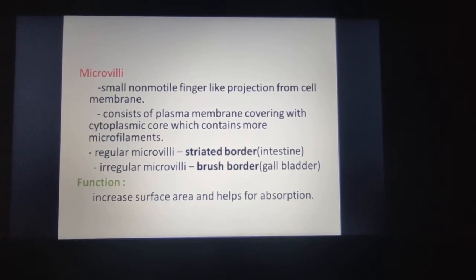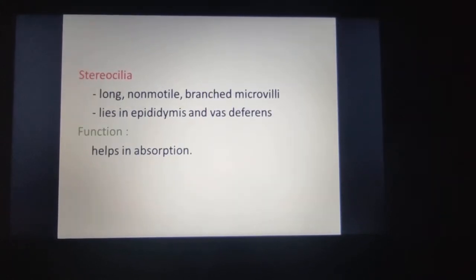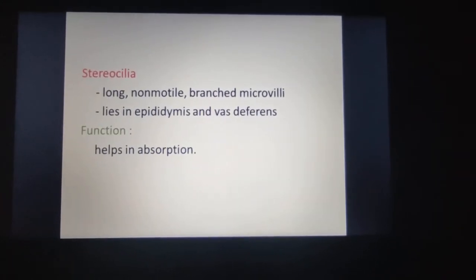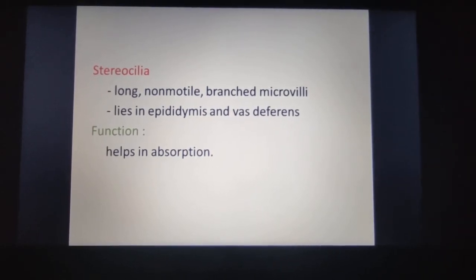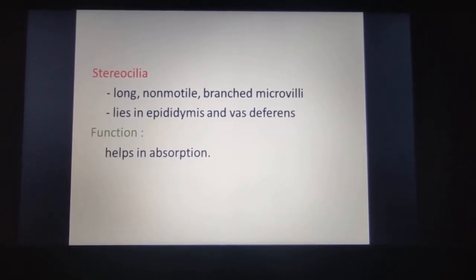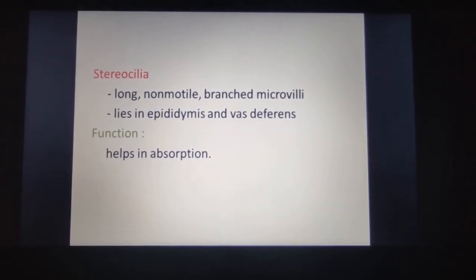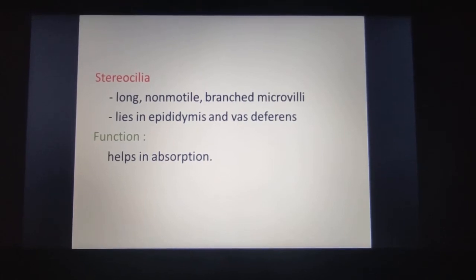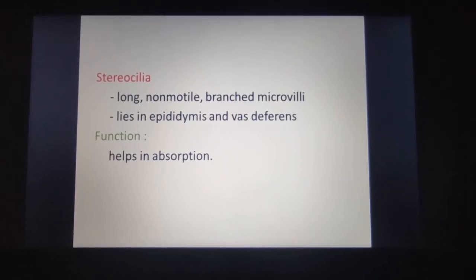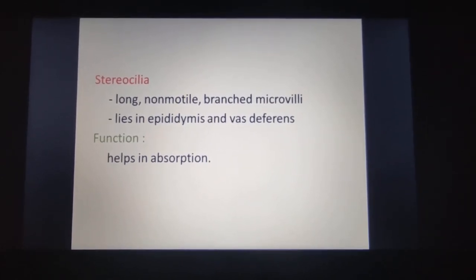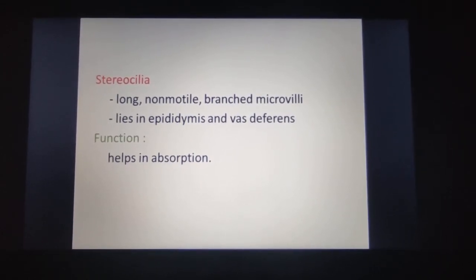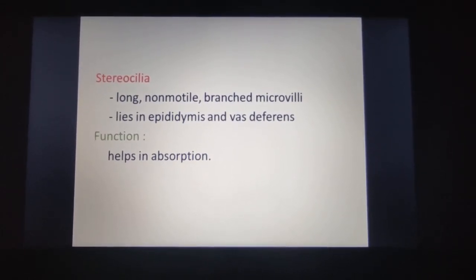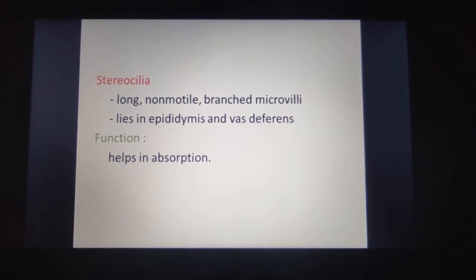Stereocilia are long, non-motile, branched microvilli. They are found in the vas deferens and epididymis, and their function is absorption. So the three surface modifications are: cilia, microvilli, and stereocilia.